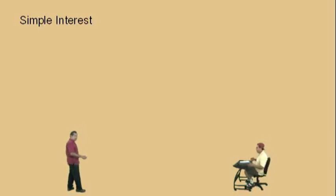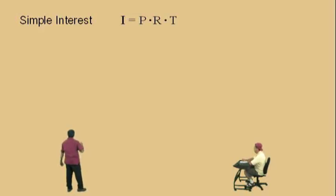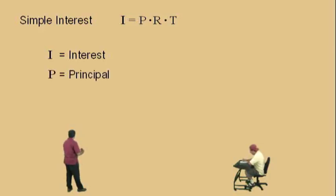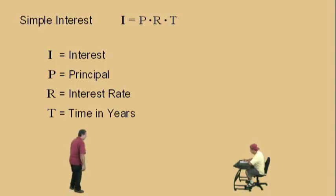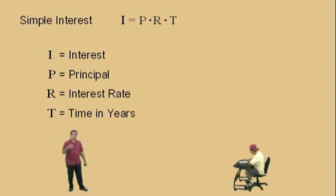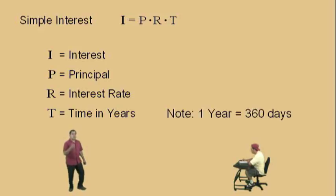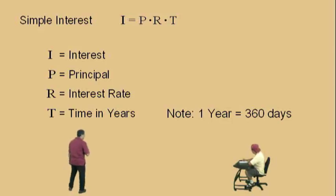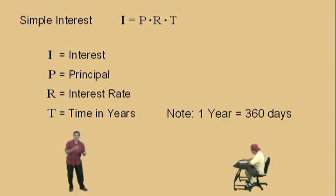Some people call this formula PERT. That's because I equals PRT, where I is the interest, P is the principal, R is the interest rate, and T is the time in years. In some cases, we take out a loan for 90 days, in which case we have to convert days to years. The conversion used with the simple interest formula is that one year is 360 days. That's because the average of all our 12 months is 30 days, and 30 times 12 is 360.